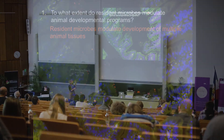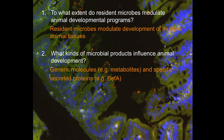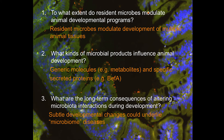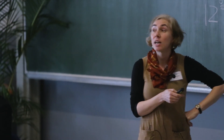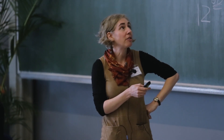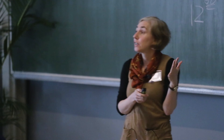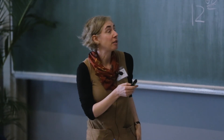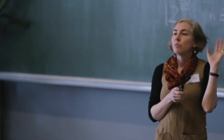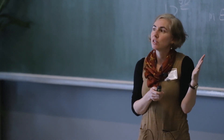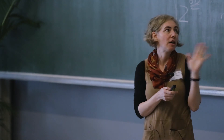In conclusion, I've talked today about how resident microbes can influence developmental programs, what kinds of microbial products can do this, and what are the long-term consequences. From our zebrafish model, we're learning that resident microbes have important roles in the maturation of the digestive tract as well as tissues such as the pancreas. We can find examples of both generic molecules such as lipopolysaccharide and very specific secreted proteins such as BEF-A that can influence these developmental programs. As we think about diseases associated with microbiome imbalance, we really should be thinking about developmental origins for those diseases, and whether early life history events that influence development of tissues can have long-term consequences for health.